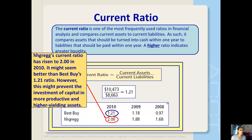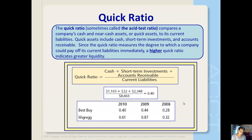HH Gregg's current ratio is 2.0, so it might seem that it's better than Best Buy's. However, this might prevent the investment of capital in more productive and higher yielding assets. It looks good that HH Gregg has that higher current ratio, but we'd have to dig deeper and make sure that they're not mismanaging. You don't want too much cash lying around, though personally I wouldn't consider a current ratio of 2.0 as too much cash. Investors typically like a current ratio of about 2.0 — any lower means it might be tight to pay bills, and any higher means you might have too much cash lying around.